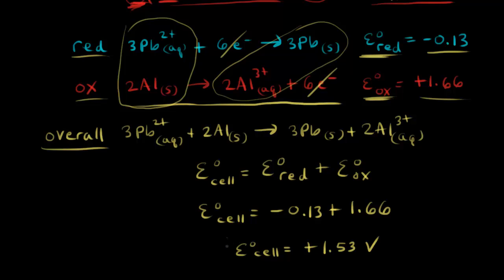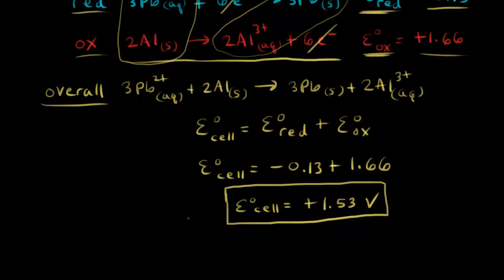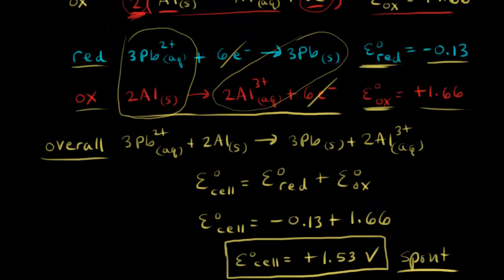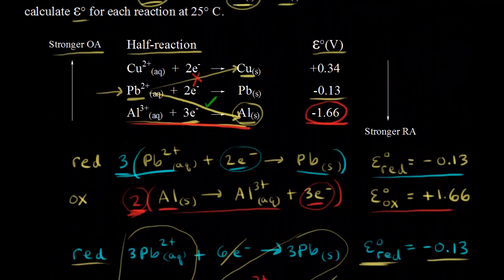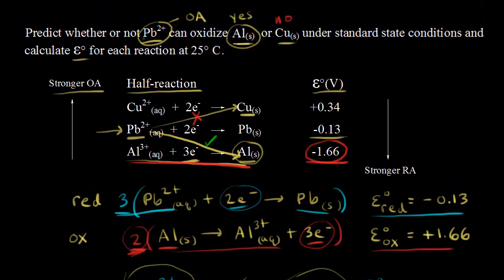Since the standard cell potential is positive (+1.53 V), this is a spontaneous reaction, which confirms our prediction that Pb²⁺ can oxidize aluminum. We predicted yes using the diagonal rule, and the calculated E°cell confirms it.